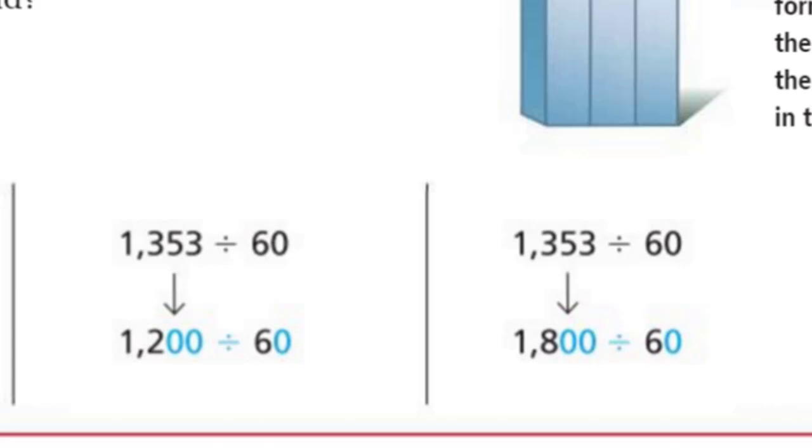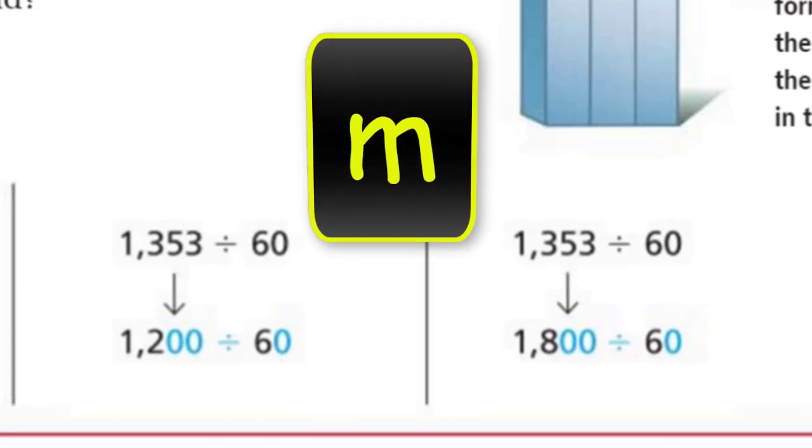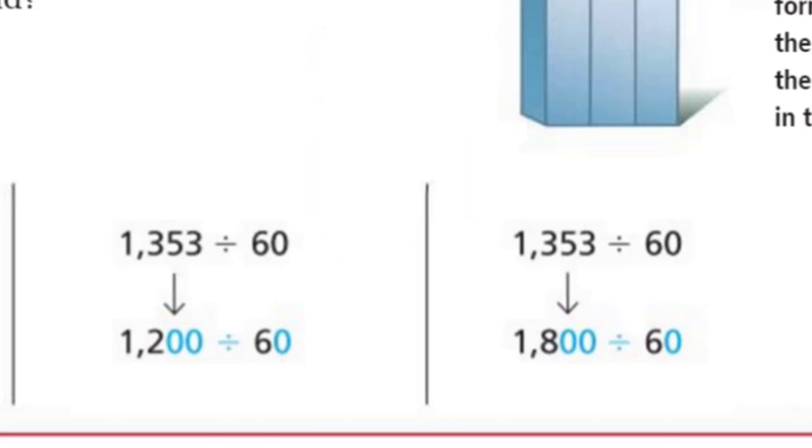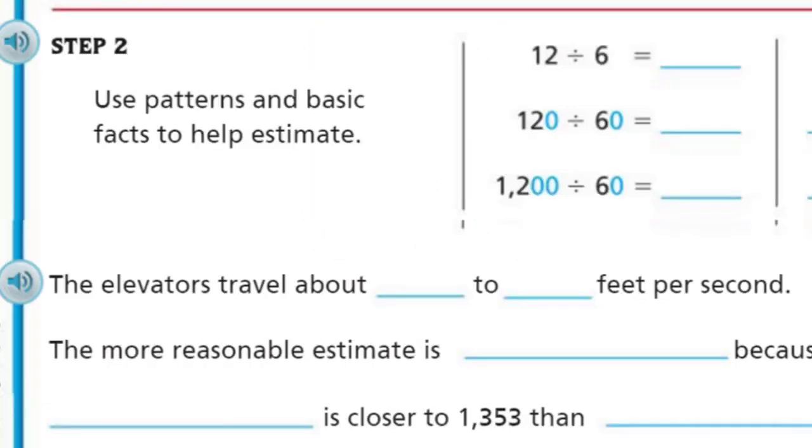So you see where we're going with that. We have two estimates. One estimate you can see is kind of small. 1,200 is less than that 1,353. But when we look at the 1,800, that's larger than the 1,353. So we've chosen two estimates. One low, one kind of high. Something to kind of keep in mind.